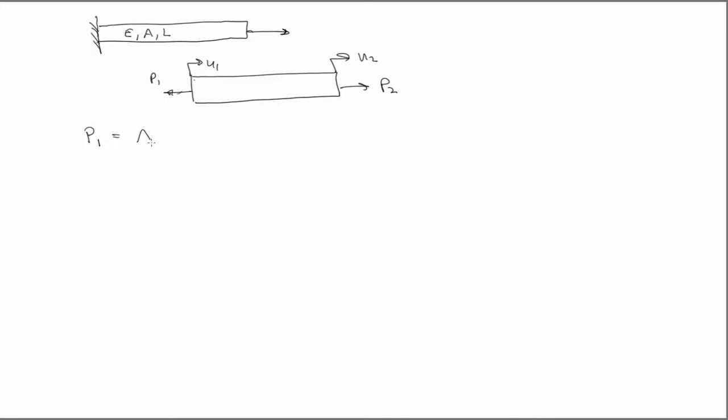P1 is going to be equal to A times the stress at the end. And according to Hooke's Law, that's E, E1. So that's AE. And if we use our definition of engineering strain, it's U1 minus U2 over L. So that's equal to AE over L U1, minus AE over L U2.